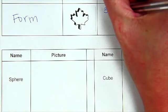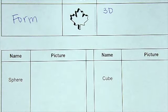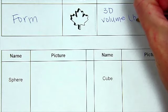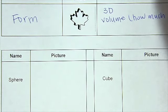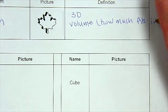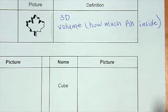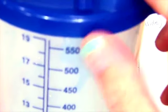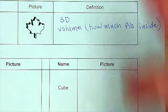For our definition, we're going to write 3D, which means three-dimensional. When you're figuring out how much volume it has, volume is how much fits inside. I have a water bottle right here that holds 16.9 ounces and a cup from the hospital that holds 20 ounces. Those are the volumes, how much fits inside.